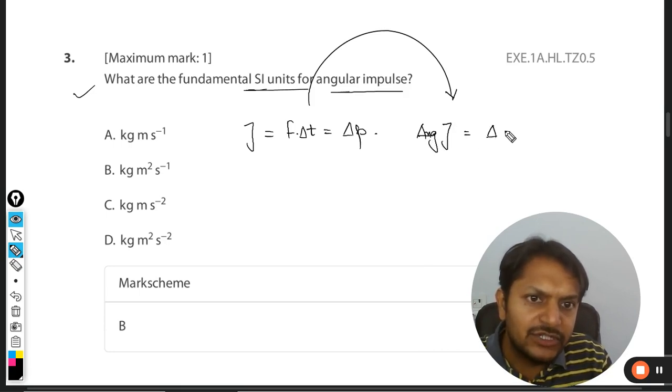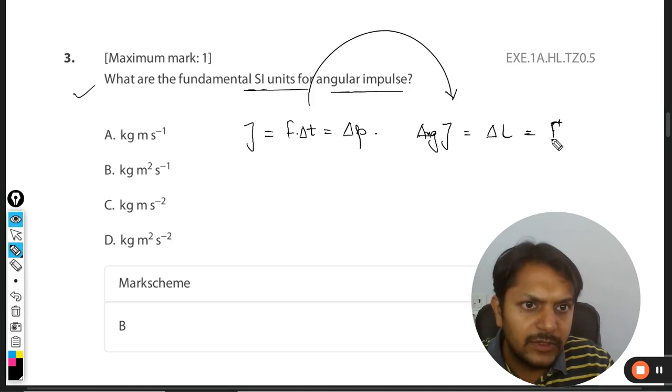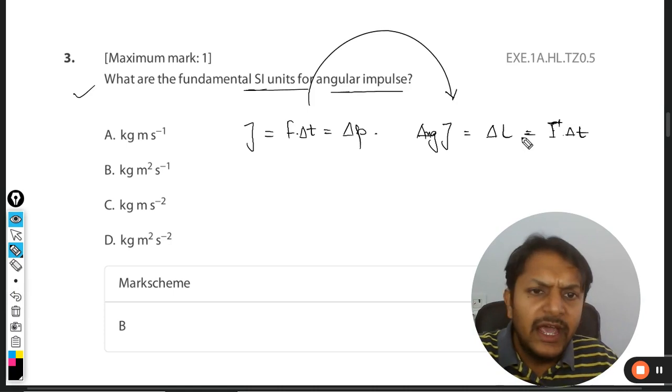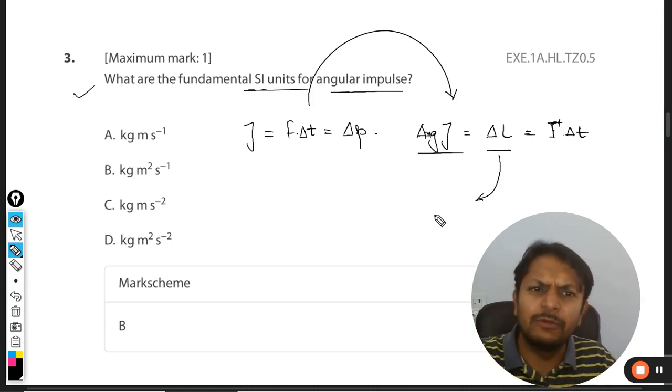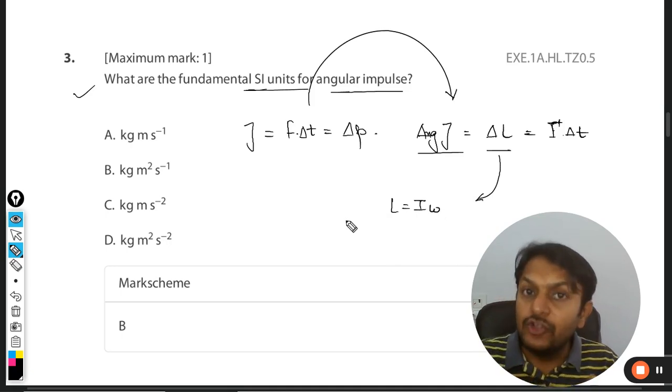Clearly in the case of rotational dynamics, we can call it angular impulse. This is equal to the change in angular momentum, or we can say it is the product of torque with Δt. Any formula we can use, and this is equal to angular momentum.